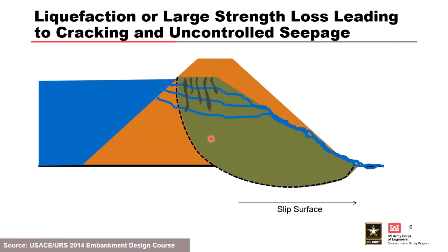The next scenario is liquefaction or large strength loss leading to cracking or uncontrolled seepage. Strength loss occurs in the soil in or underneath the downstream slopes, again leading to instability of the embankment. However, in this case you don't exceed your freeboard — the instability is not that great. But you do create large cracks in your dam due to the instability and movement of the slope, and these cracks lead to internal erosion, at which point you'd evaluate whether internal erosion would occur.